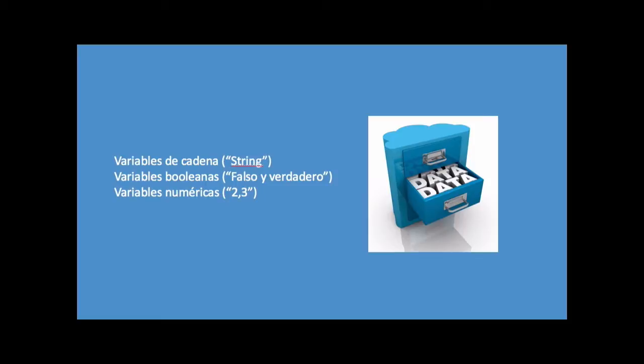El primer dato es el de cadena o tipo string, que se usa para almacenar texto. El segundo son las variables booleanas, que se usan para almacenar datos falso y verdadero. Y el tercero, variables numéricas, para almacenar datos numéricos.